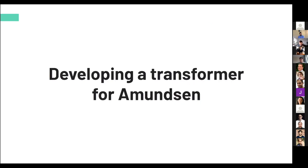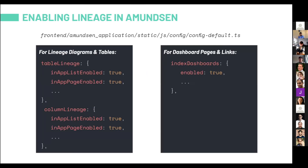Taking a step back from Alvin, I'll describe the development process. This was actually the first project of my career, so it was a whole journey I was really proud of as I was becoming a software engineer. To develop the transformer and enable lineage in Amundsen, we needed to pull from the GitHub master and enable the correct lineage tags, including table lineage, column lineage, our configurations, and the index dashboards flag set to true for dashboard lineage.